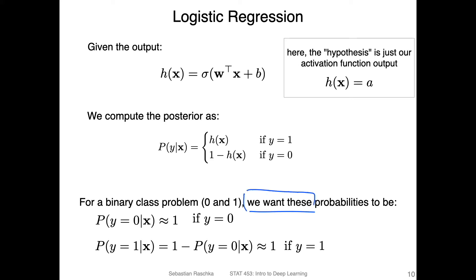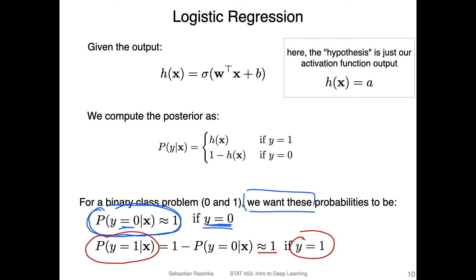We want the class membership probability for class zero to be maximized — approaching one — if the true label is indeed zero. Vice versa, we want the class membership probability for class one to be as high as possible, also approaching one, if the true label is one. So what we want is to maximize the probability for the given true label.